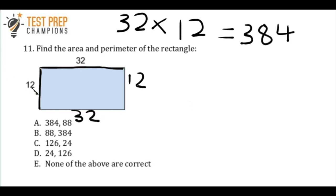You can either think about it, you could do 12 times 2 plus 32 times 2. That's one way to think about it. Or you could also just think about it like adding all of the sides up. And so that's the way I'm going to show right here.